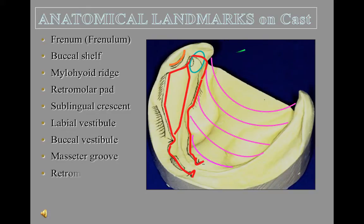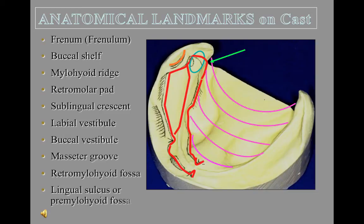The retromylohyoid fossa area is very important for the mandibular denture. When utilized, we can gain some additional retention for the denture. The distal of the denture must extend into this fossa. Its length is determined by the pharyngeal muscles, mainly the superior constrictor, and the anatomy of the fossa.